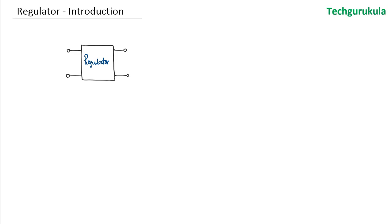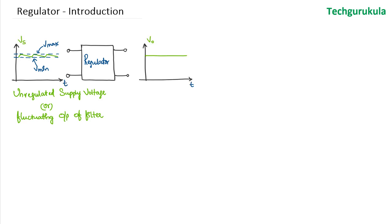Let us see what is expected out of a regulator. Here at the input of the regulator we are showing unregulated supply voltage or the fluctuating output of filter where we can see that the voltage is changing between Vmin and Vmax. But our expectation out of regulator is to get us an output which is constant which is DC as shown here.